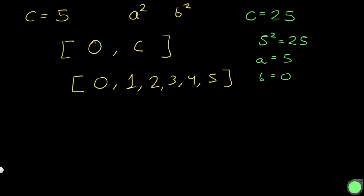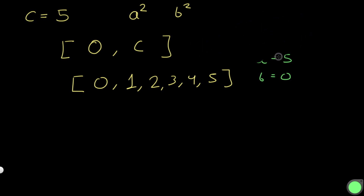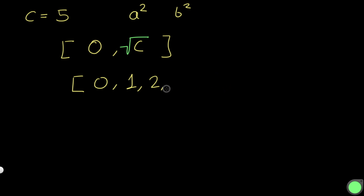For c equal to 25, the range is 0 to square root of 25, which is just 5, so 0 to 5. This actually decreases our search space by a lot. Applying this to c equal to 5, the square root of 5 is about 2.something, and we round it down, so we only look at 0, 1, and 2. That's our new search space. We could still run two for loops over these values, but since c can still be up to 2 to the power of 31, we want to simplify further.